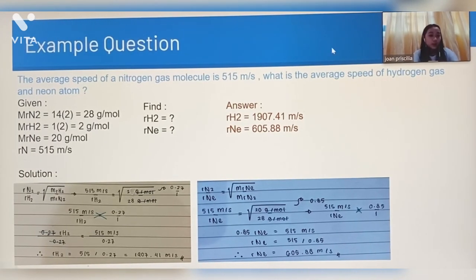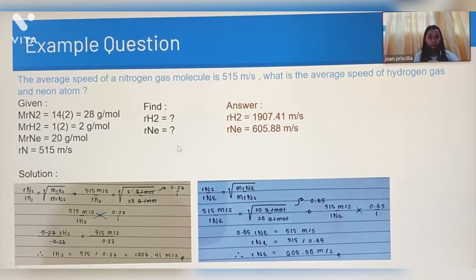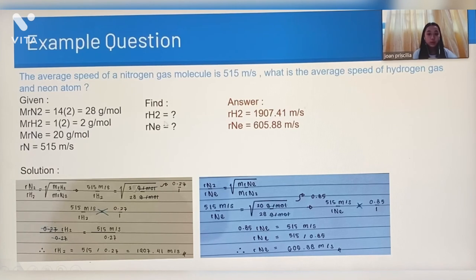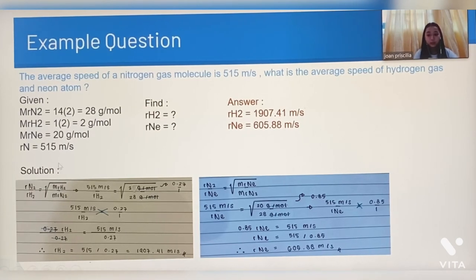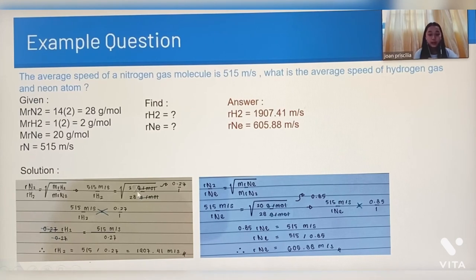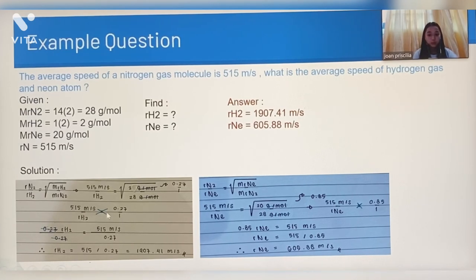We need to find R(H2) and R(Ne). To find R(H2), we write the general equation: R(N2) over R(H2) is equal to the square root of M(H2) over M(N2). R(N2) is 515 m/s, M(H2) is 2 g/mol, and M(N2) is 28 g/mol. We cancel the g/mol units, and the square root of 2 over 28 is 0.27. So it becomes 515 over R(H2) equals 0.27 over 1.